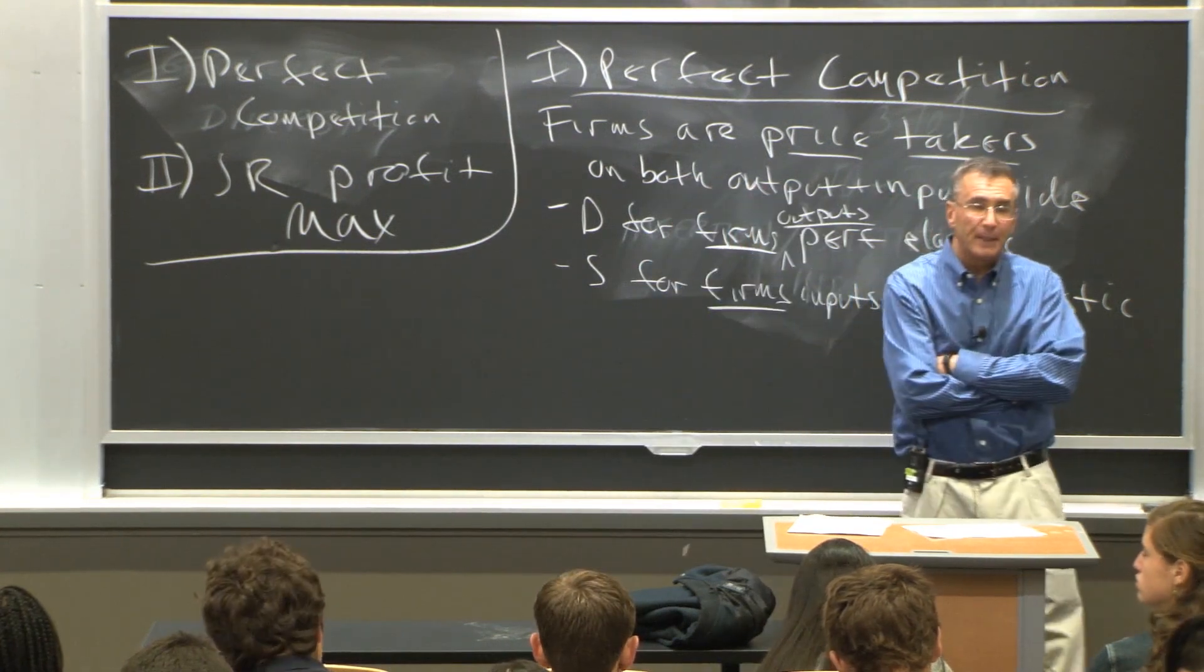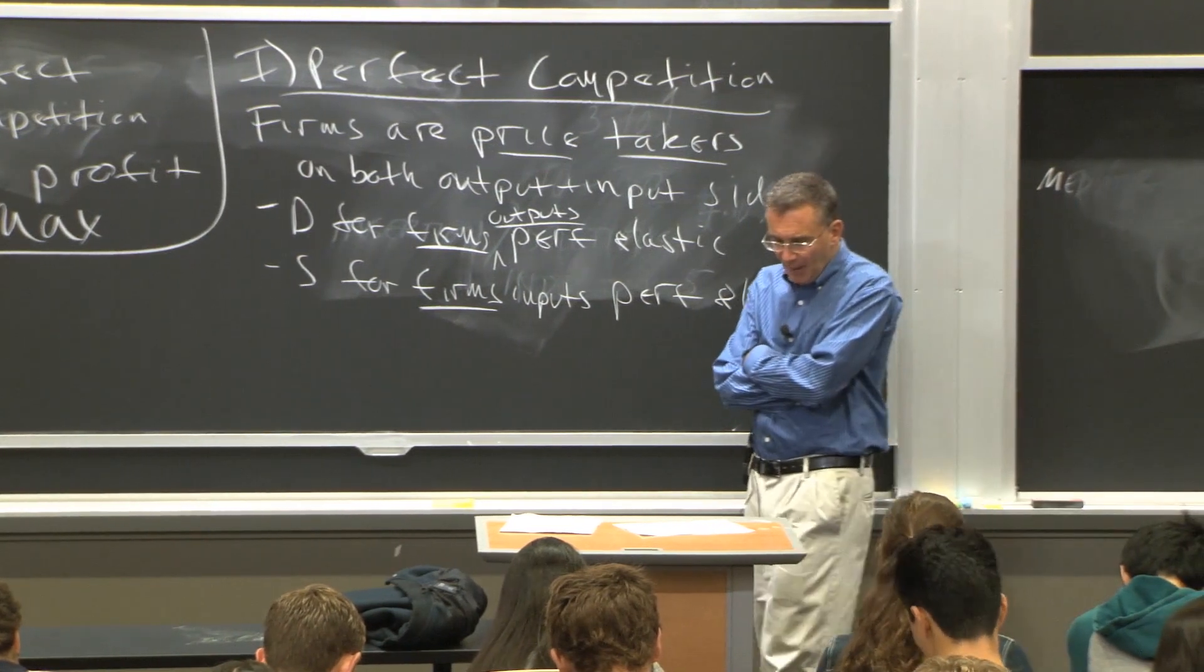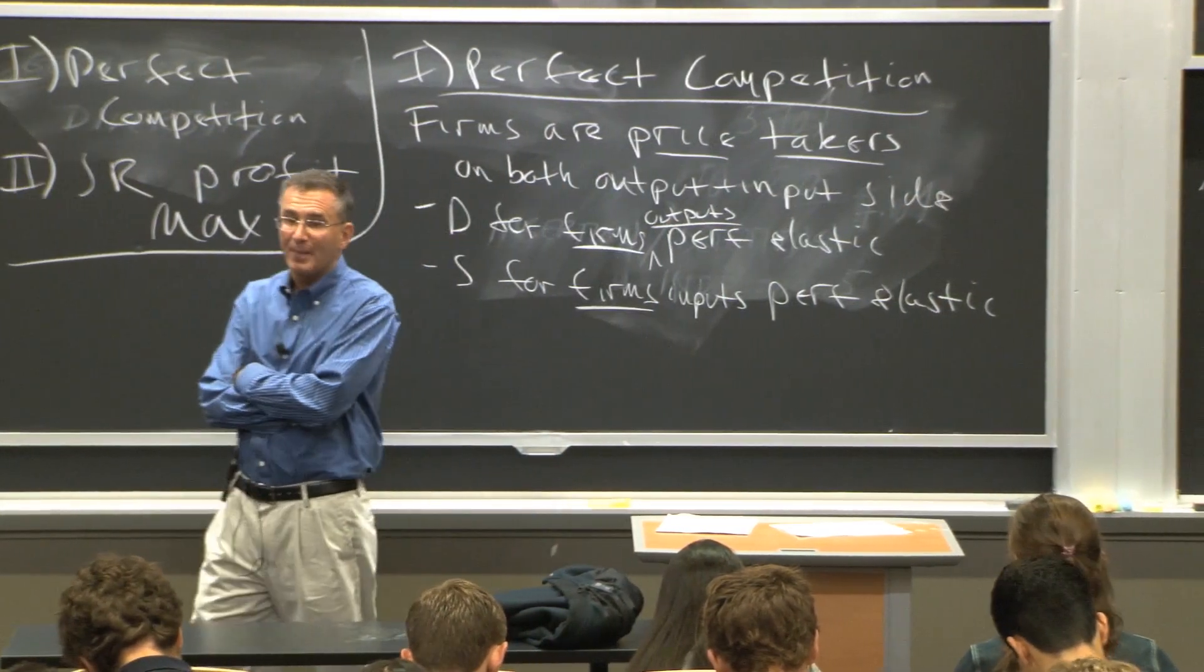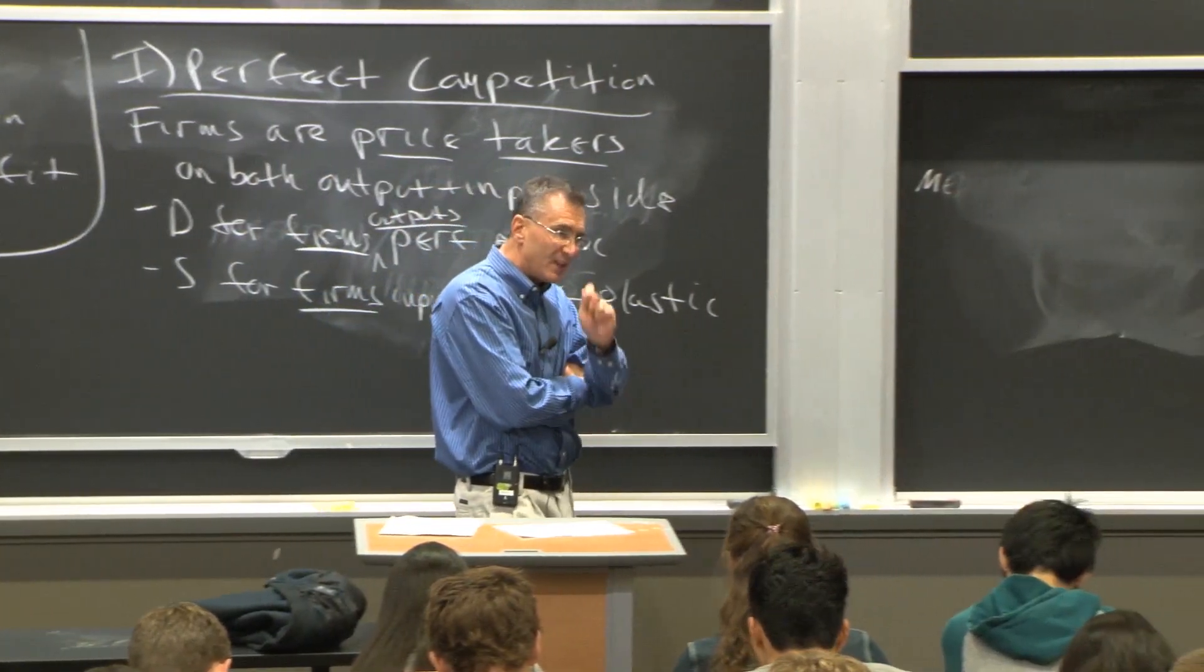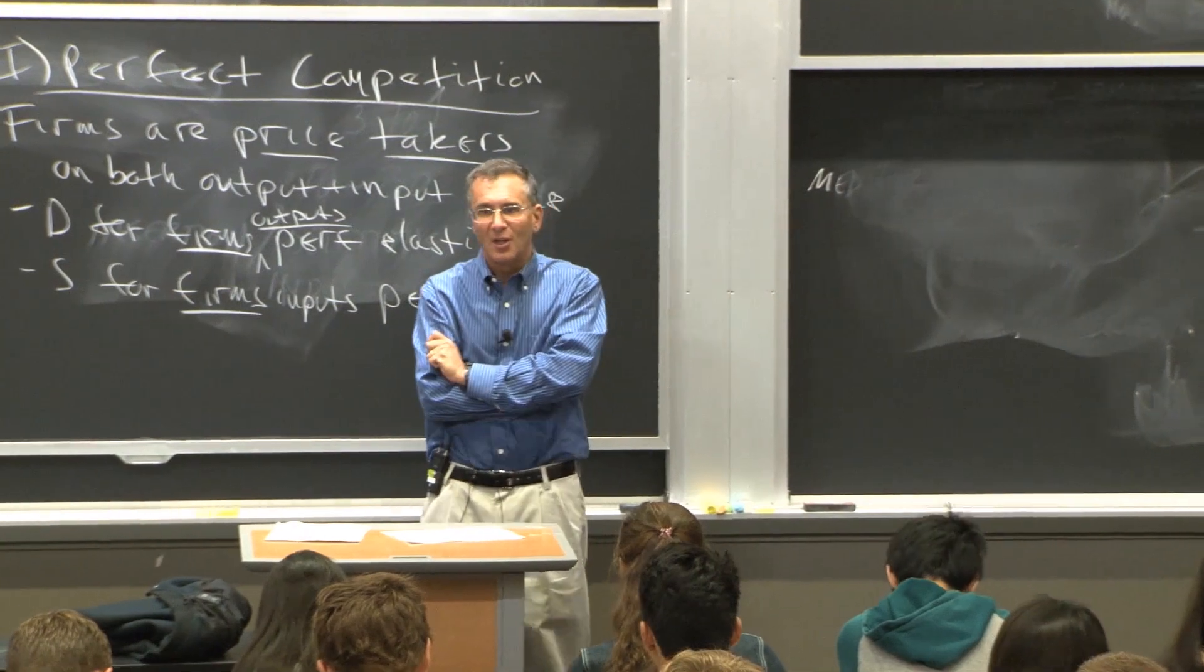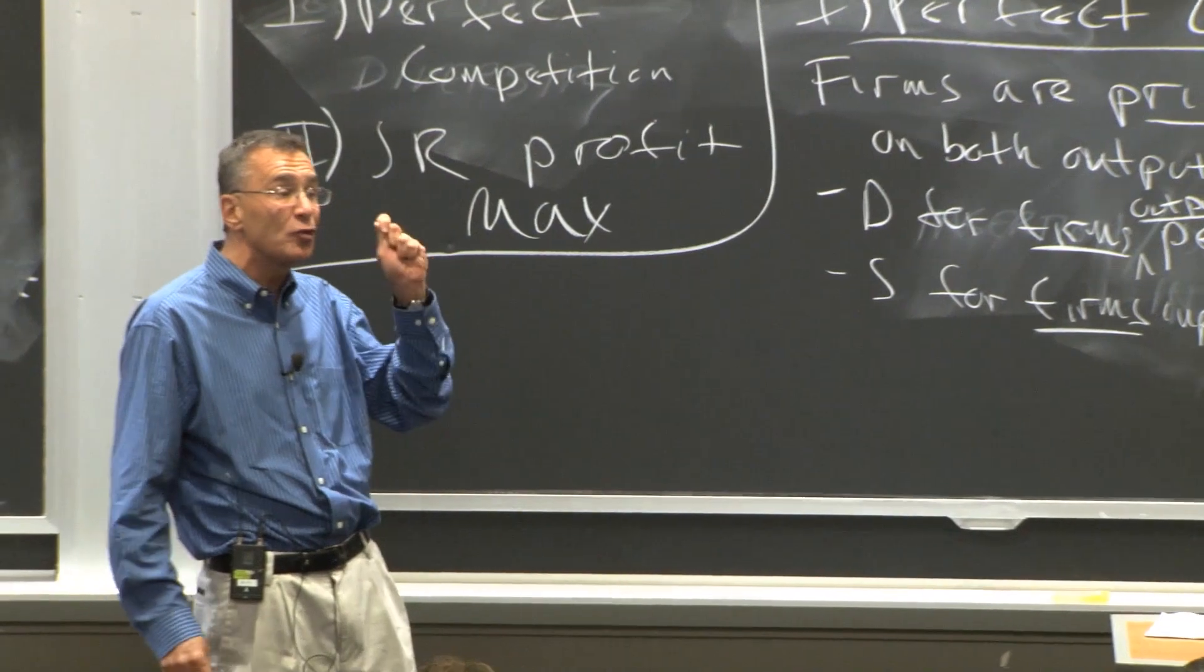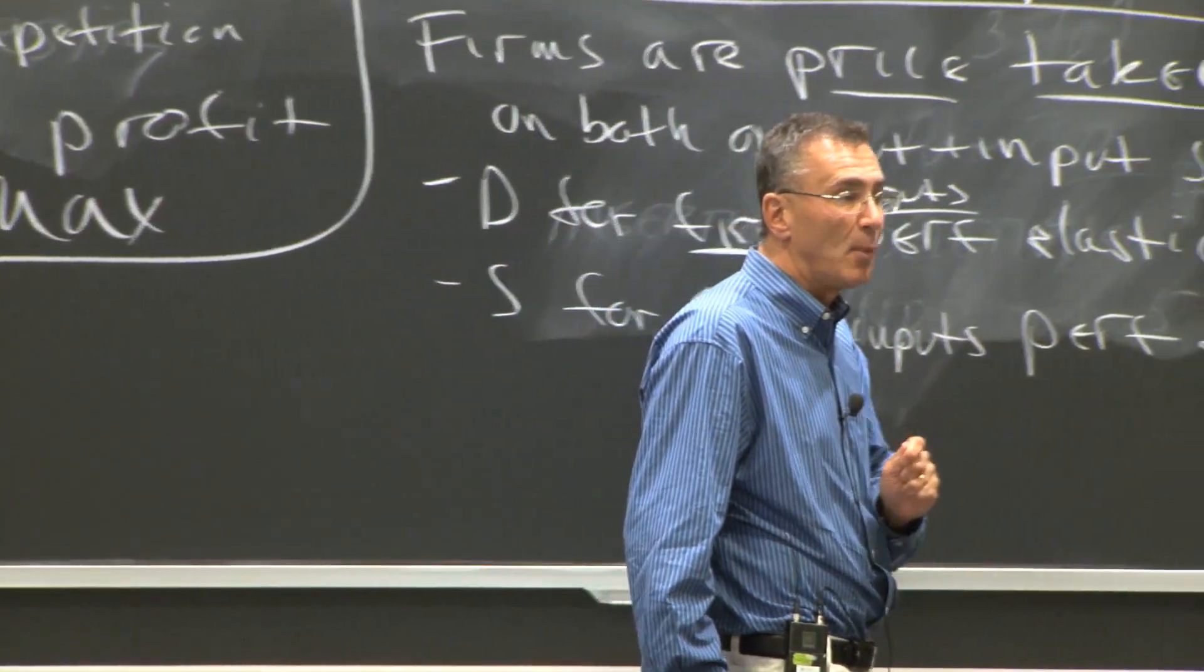So let's focus on the first initially. Look at figure 10-1. Figure 10-1 is an example of a firm facing perfectly elastic demand. Now here is a trick I'm going to try to use consistently. I'm going to try to use little q when I mean a firm and big Q when I mean a market.